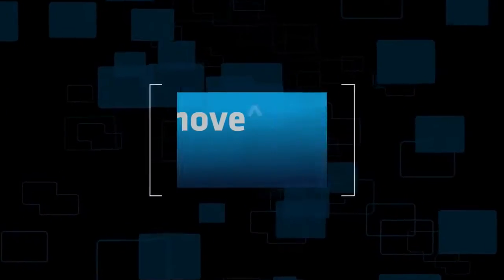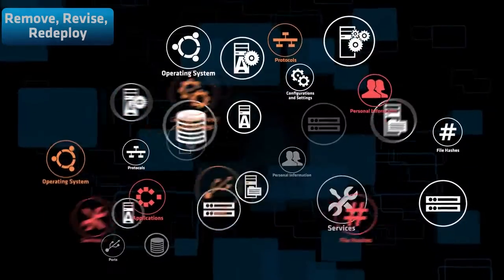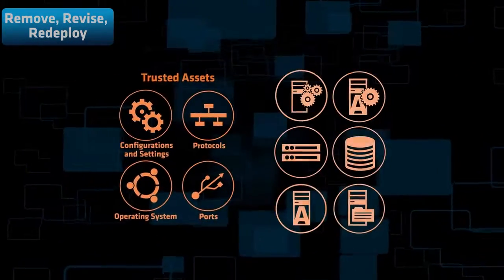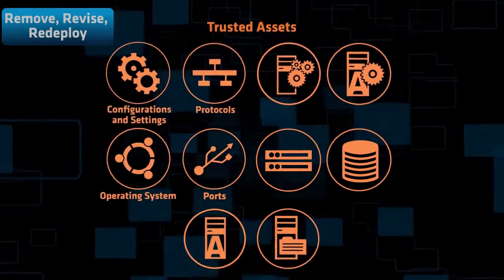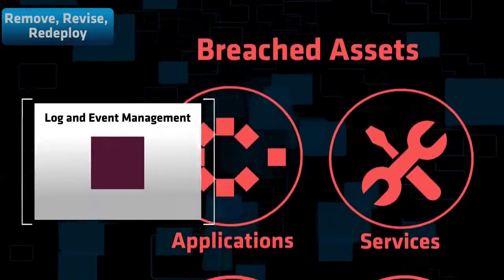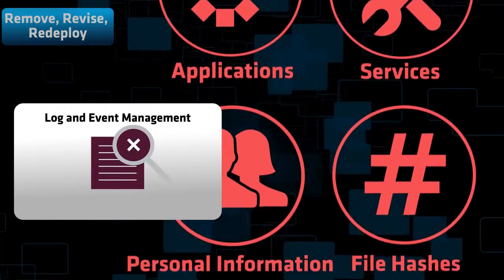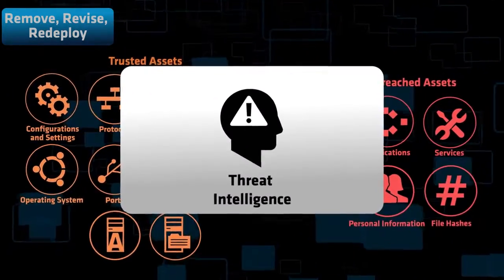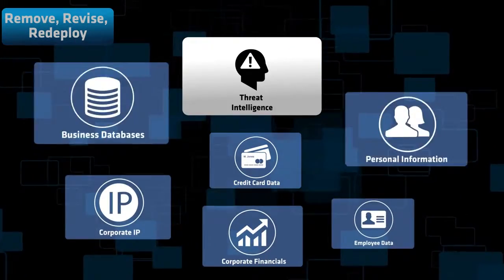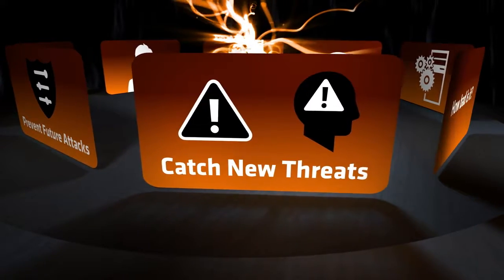Step 4: Remove, revise, redeploy. Now you can remove or isolate compromised assets and suspicious systems, revise configurations, and redeploy them with confidence. Be certain copies of the harvested and compromised system configurations plus related log and event data are saved for further analysis. At this point, executives can get the answers they need to understand how the breach happened, what was compromised, and their next question: how do we prevent this in the future? And how will we automate to catch new and emerging threats going forward?